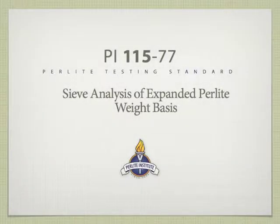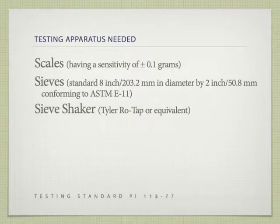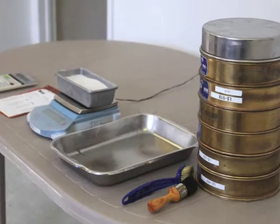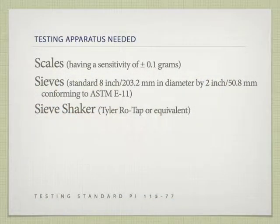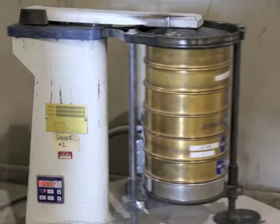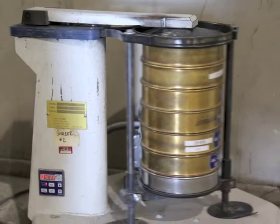This method covers the determination of the particle size distribution of expanded perlite on a weight basis. You will need a balance or scale that is sensitive to within plus or minus 0.1 gram, standard sieves that are 8 inches in diameter by 2 inches high, or the standard metric equivalent conforming to ASTM E11, and a sieve shaker like the Tyler Rotap or equivalent.